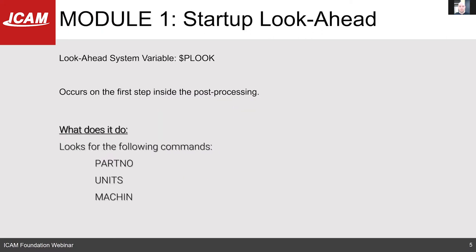For the startup lookaheads, this is the first thing that happens when you launch the post processor. If you press F11, which is the single step inside of the macros, the first thing it will do is look for your part number, the units of your program, and your machine statement — which is the post processor name, the tape file, and CL file name.